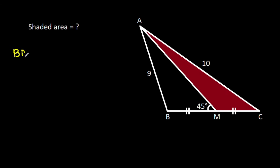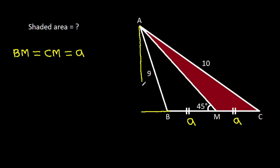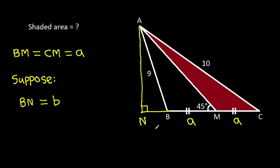We have BM equal to CM. Suppose BM is A and CM is A. If we extend CB and from point A make a perpendicular on CB, suppose this point is N and suppose BN is B.